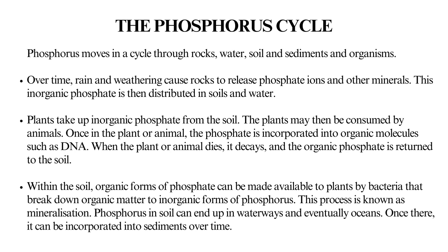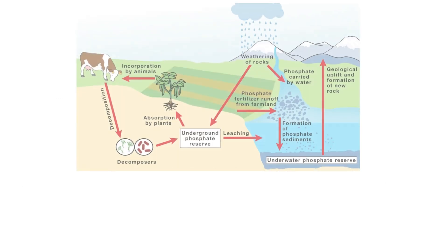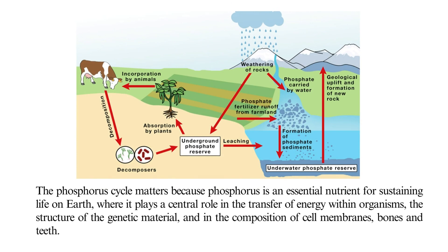Phosphorus in soil can end up in waterways and eventually oceans, where it can be incorporated into sediments over time. The phosphorus cycle matters because phosphorus is an essential nutrient for sustaining life on earth, playing a central role in the transfer of energy within organisms, the structure of genetic material, and in the composition of cell membranes, bones, and teeth.